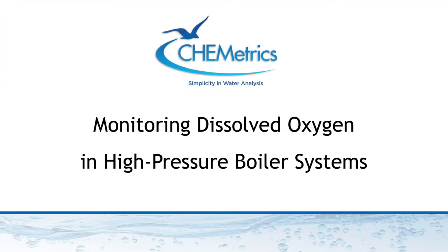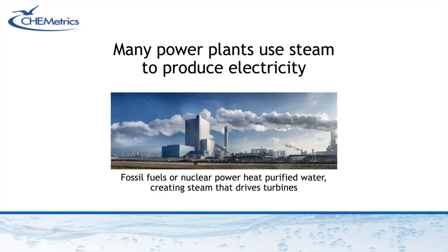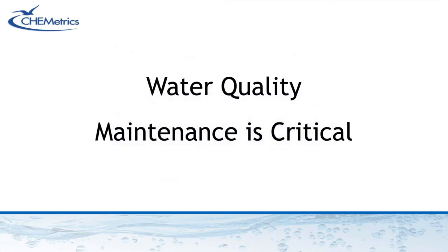When it comes to controlling and monitoring dissolved oxygen levels in boiler feed water, it pays to get it right. Many power plants use fossil fuels or nuclear power to heat purified water into pressurized steam that drives turbines to produce electricity. Since steam is so important to power generation, water quality is critical.